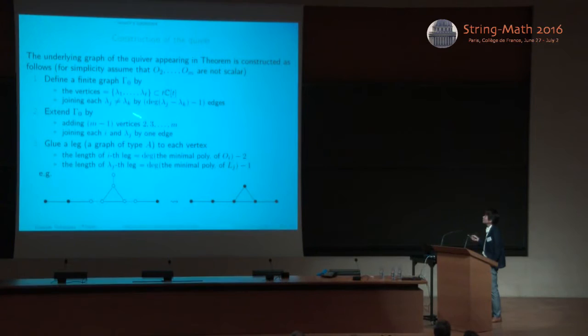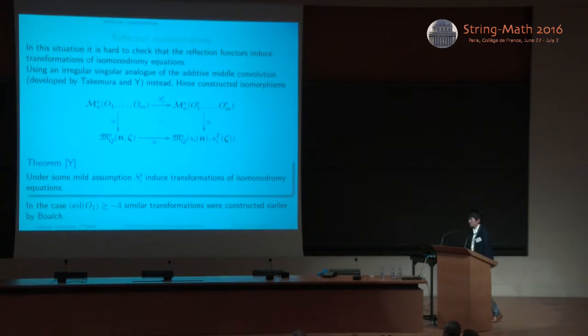So this step is trivial. And this gives three legs. So gluing these legs, we get this quiver. Sorry, this graph. So this is Boalch's conjecture.